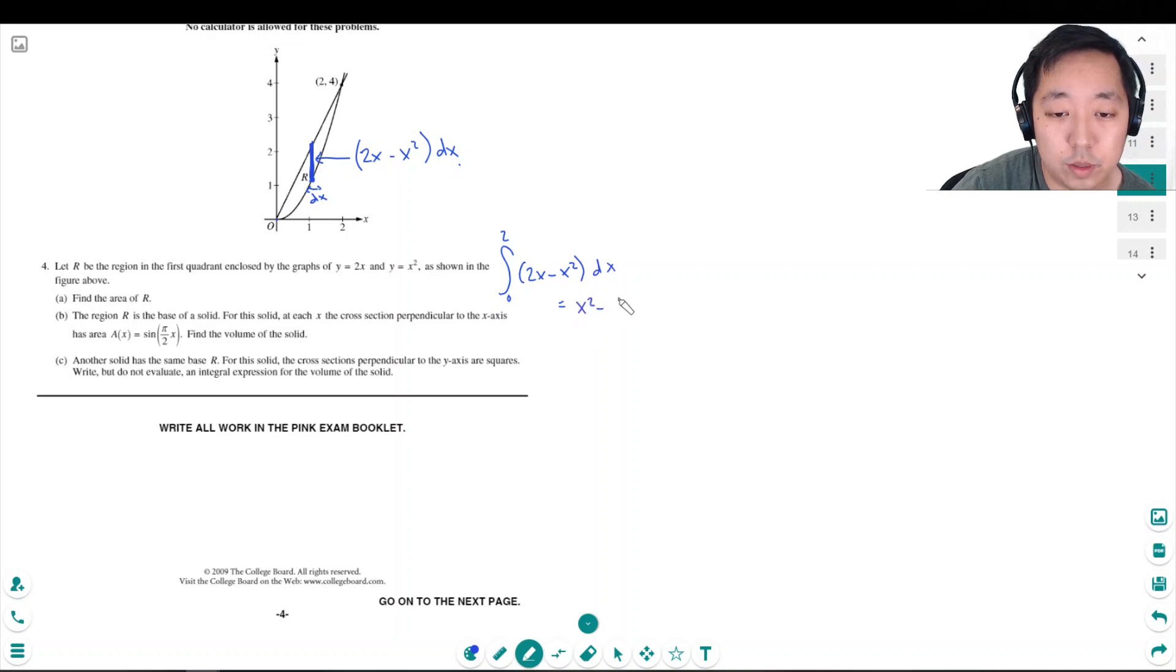So this is x squared minus one-third x cubed from 0 to 2. That's 4, the 0 doesn't really do anything, minus one-third times 8. That's 4 minus 8 thirds, that's 12 thirds minus 8 thirds, that's 4 thirds.